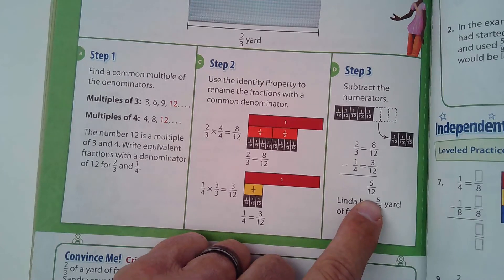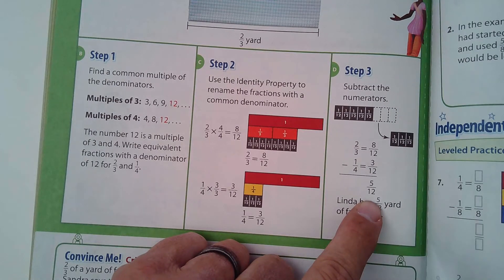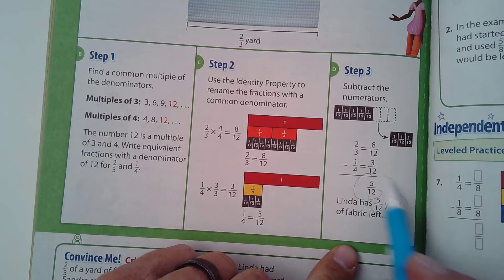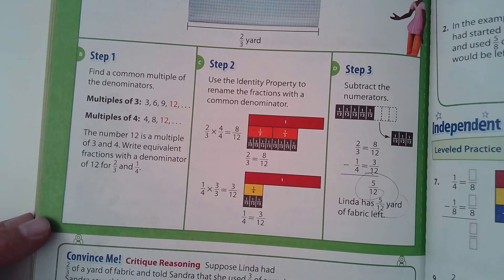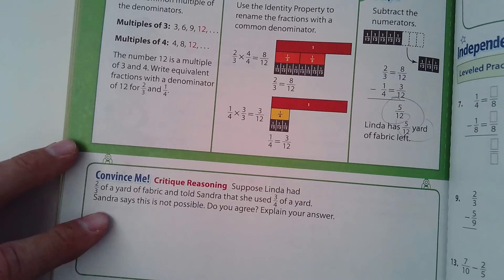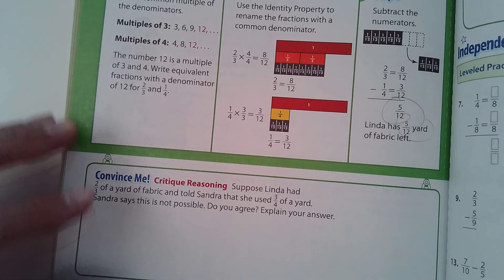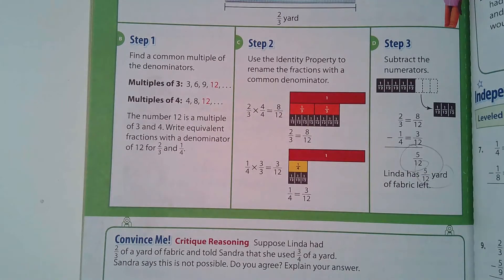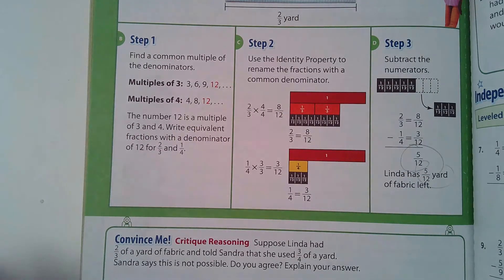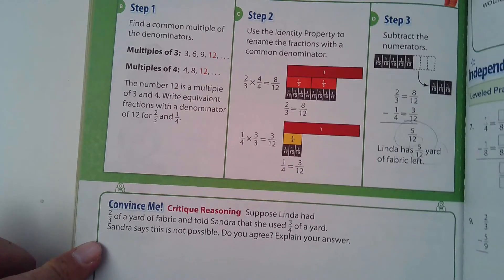And so if you look in your book and the steps that they go through, you can see that they do end up with five-twelfths. Down at the bottom here, looking for my pen, there it is. That convinced me.